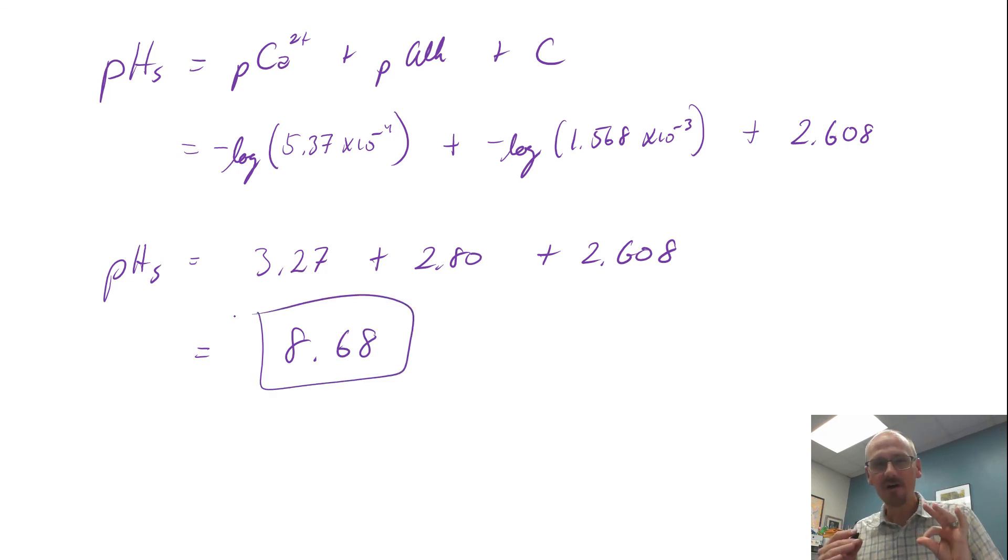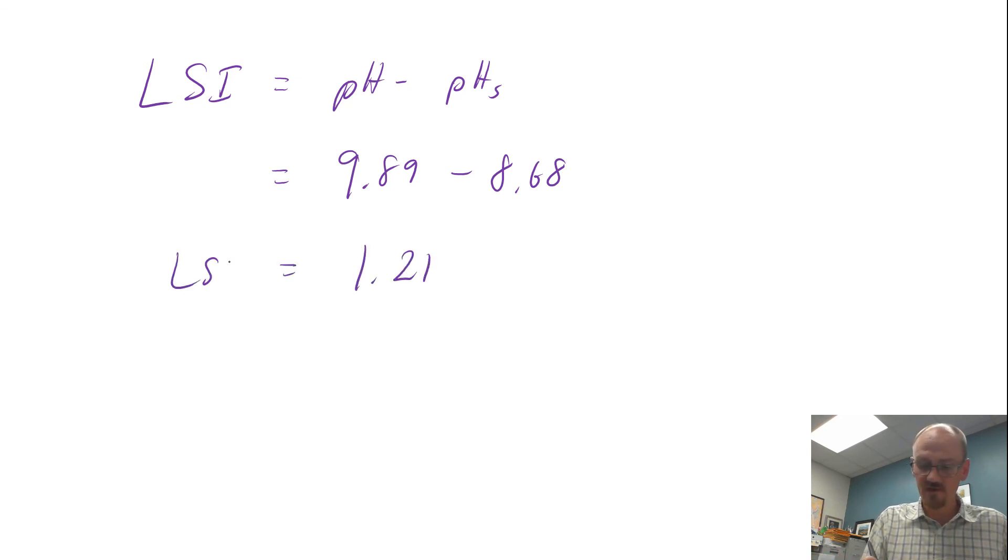What this means is that if our water were at pH 8.68, then it would be neither depositional nor corrosive. We're at a higher pH than 8.68. Our actual pH is 9.89. We know at high pHs, things tend to precipitate, so we're probably going to be in a depositional range. But let's formally calculate our LSI. It's simply the pH minus the pHs. Our pH is 9.89 and our pHs is 8.68, so we get 1.21 for our LSI.